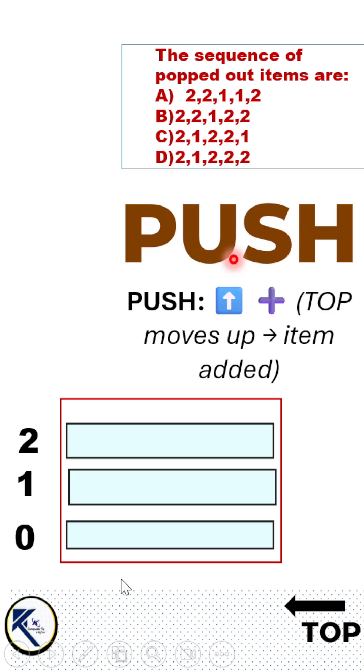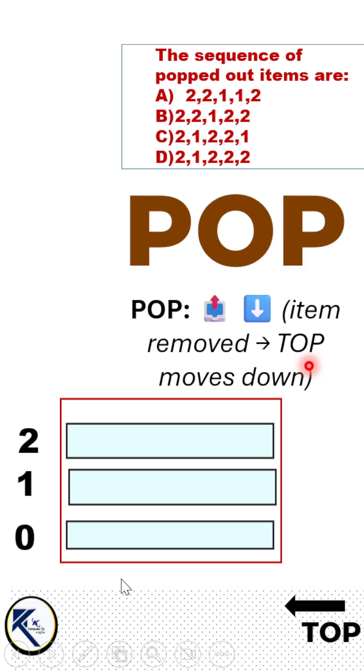Push operation adds the element on the top. First increment the top pointer and then add the element. Pop removes the topmost item. First remove the item and then decrement the top pointer.